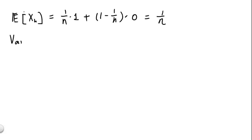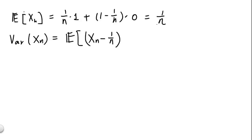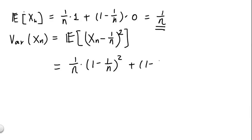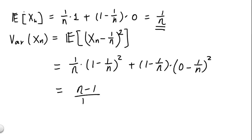To calculate the variance of xn, recall that variance is the expected value of (xn minus E[xn]) squared, where E[xn] = 1 over n. We get: 1 over n times (1 minus 1 over n) squared, plus (1 minus 1 over n) times (0 minus 1 over n) squared. Carrying out the calculations gives us Var(xn) = (n minus 1) over n squared.